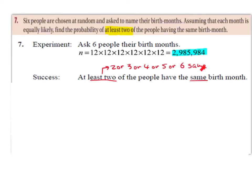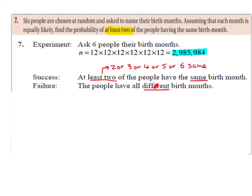But it would actually be even more complicated than that. Because if two of them have the same birth month, that would be two with the same and four not the same — since two plus four makes six. For three people having the same birth month, that would be three the same and three different. For four people the same, that would be four the same and two different, and so on. So you can see this would work out to be a very long question. So the failure would be that all the people have different birth months.